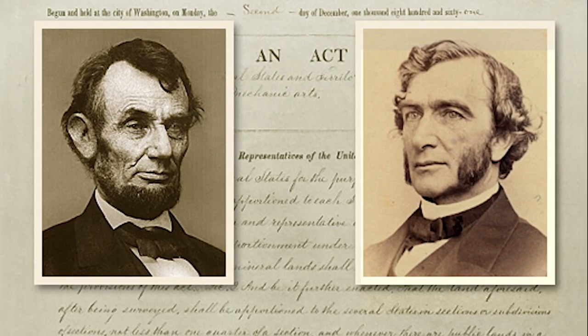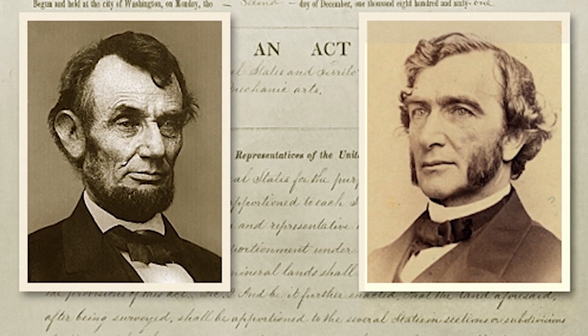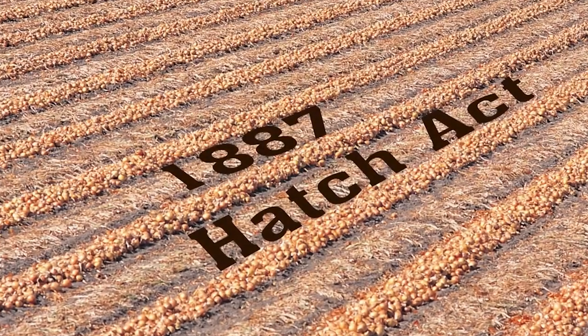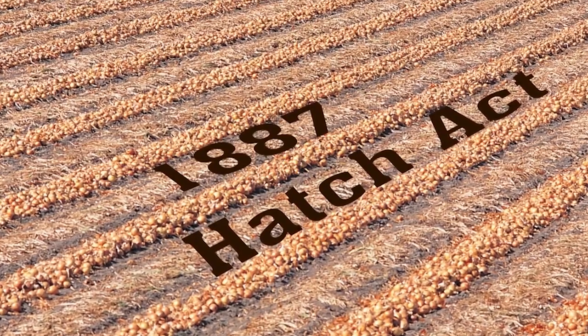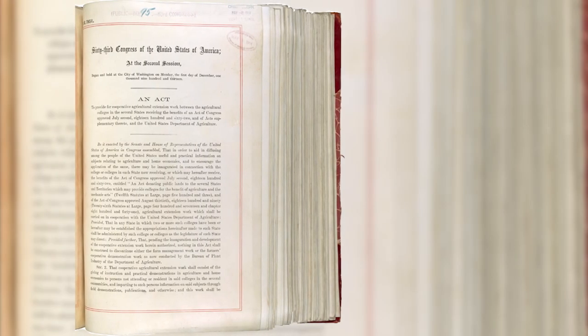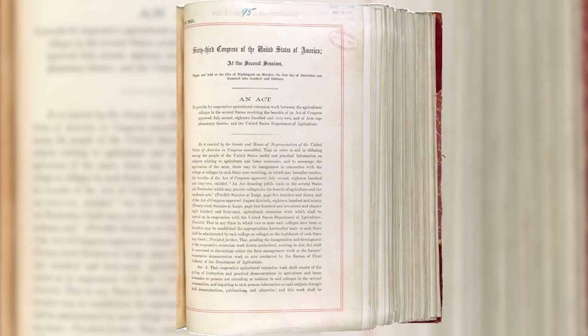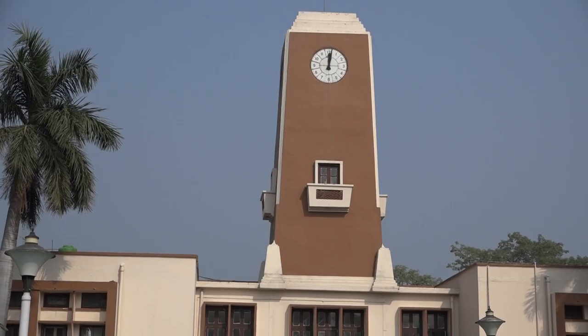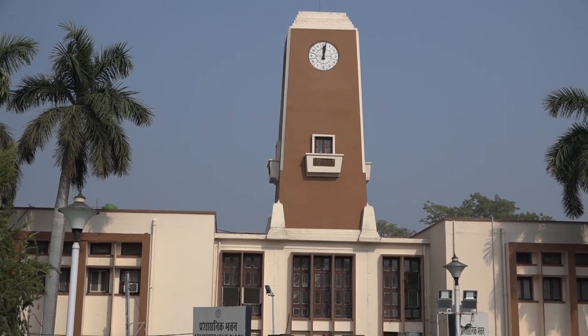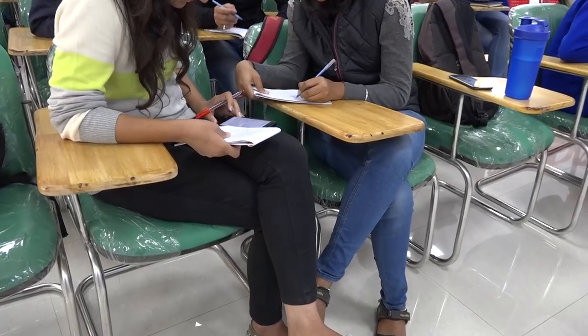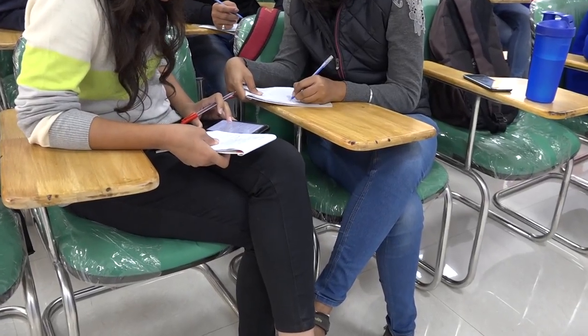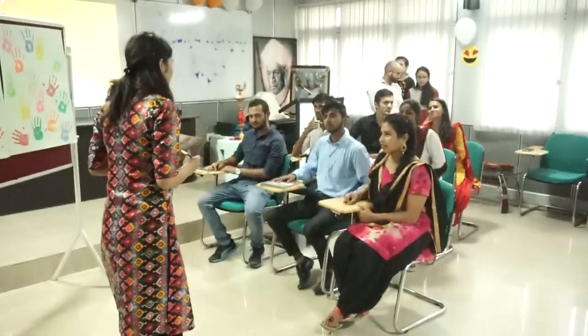The 1862 Morrill Act initiated the land-grant pattern in the USA, followed by the 1887 Hatch Act and the 1914 Smith-Lever Act. By 1960, the first agricultural university emerged in India based on the land-grant pattern, with three mandates: teaching, research, and extension.